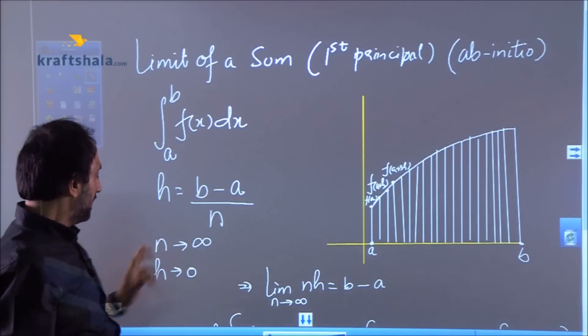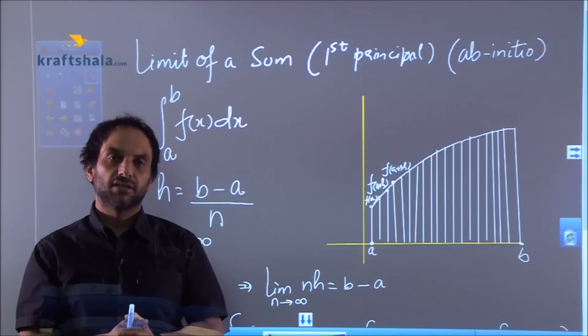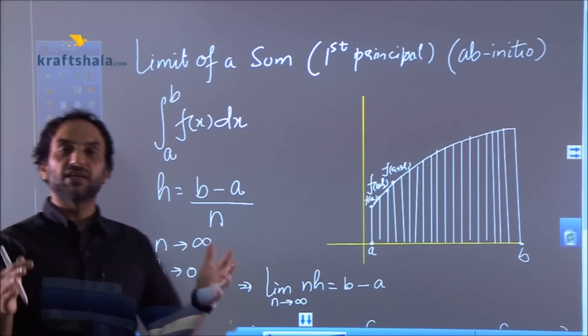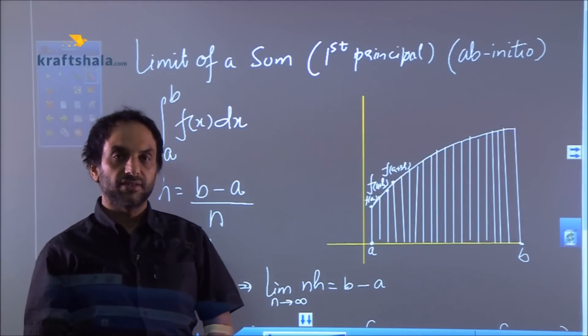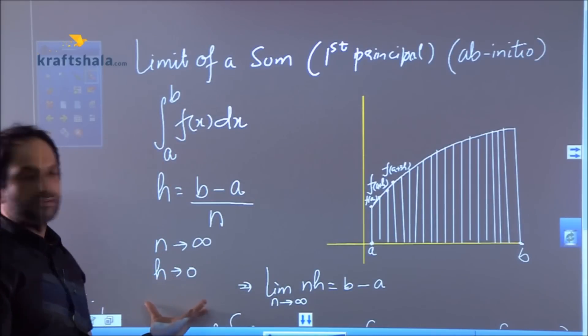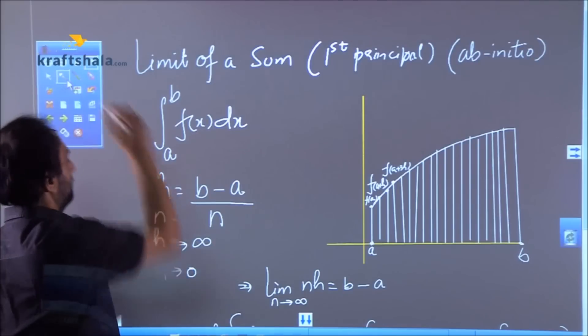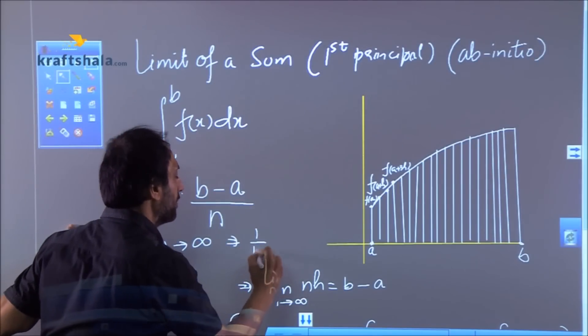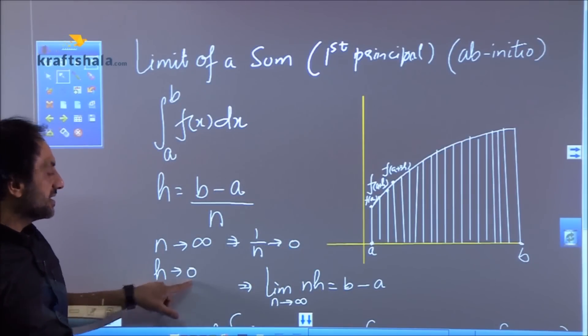And then they said increase the number of rectangles. How many rectangles? They said tending to infinity. So pack infinite rectangles in this curve. Obviously when you will increase the number of rectangles, width will decrease. Obviously if n tends to infinity, this implies 1 by n tends to 0, so h is tending to 0.